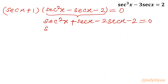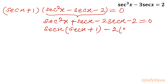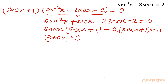From the first two terms I take sec x common, giving sec x(sec x + 1). From the last two terms, −2 is common, giving −2(sec x + 1) = 0. So (sec x + 1) is again common, and we extract it.